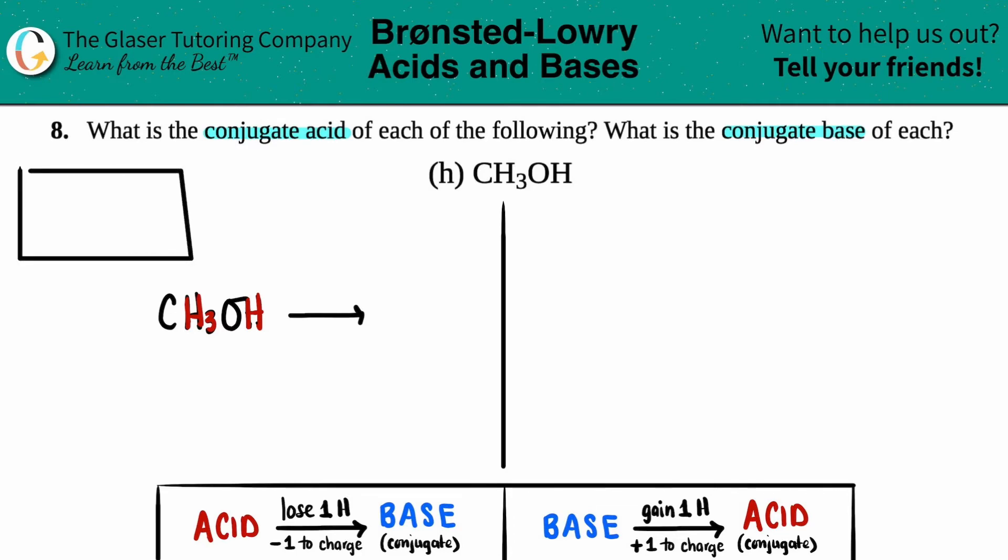The answer comes from knowing a trend on the periodic table. Here's my periodic table and the trend is the electronegativity trend. Just remember that electronegativity, as we go from left to right across the periodic table, electronegativity increases. And as we go from top to bottom, electronegativity decreases.